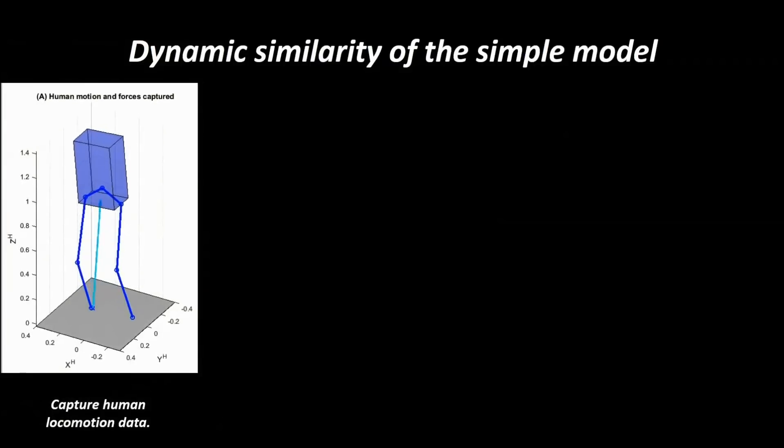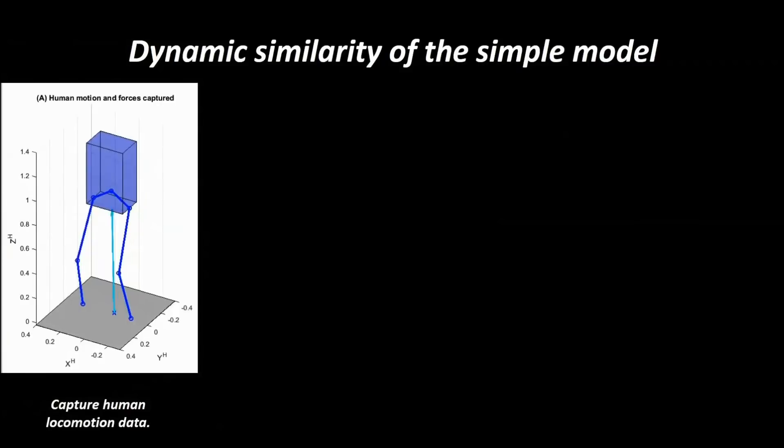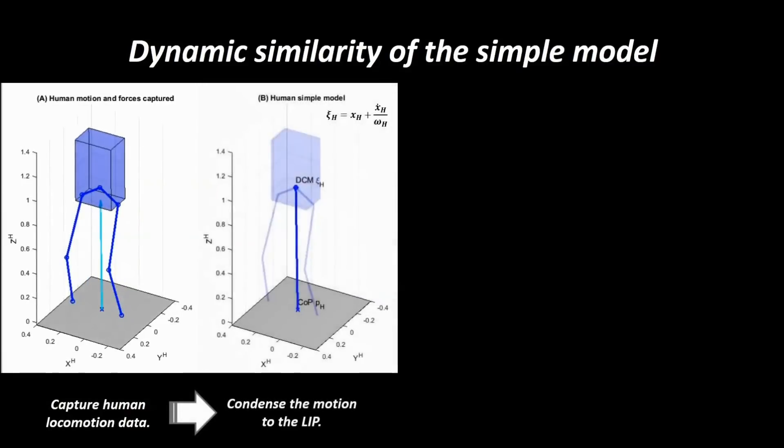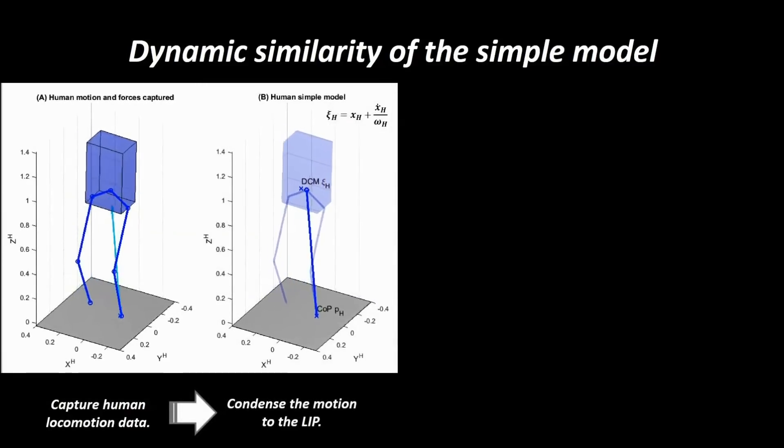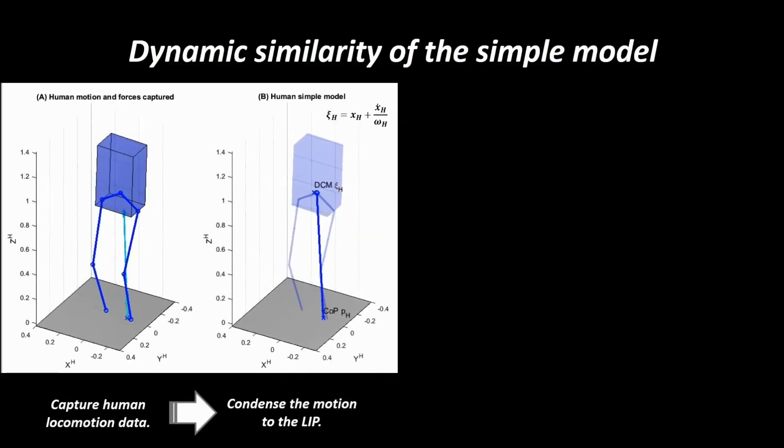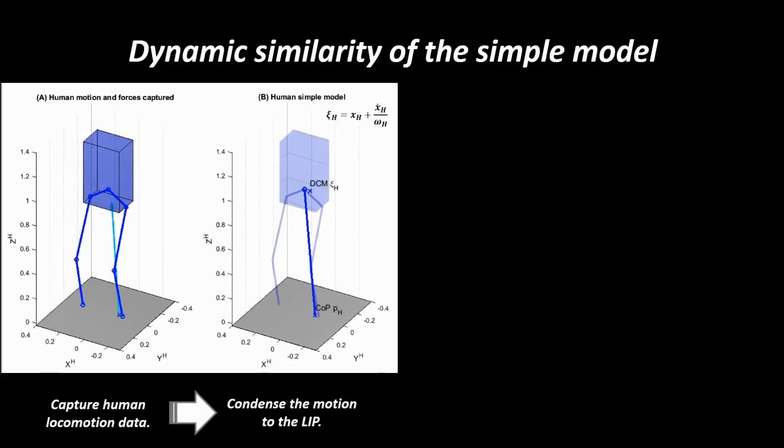To make the robot dynamically move in synchrony with the operator, we first capture human motion trajectory and condense this data using the pendulum model. The motion is fundamentally described by the translation of the center of mass and the center of pressure.